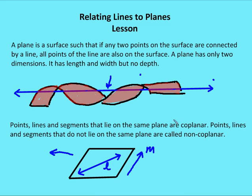Next, let's talk about coplanar and non-coplanar. Points, lines, and segments that lie on the same plane are coplanar. Points, lines, and segments that don't lie on the same plane are called non-coplanar.